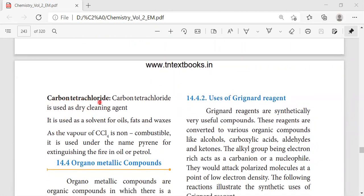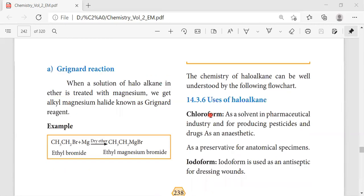Carbon tetrachloride is used as a dry cleaning agent and also as a solvent for oils, fats, and waxes. CCl4 is non-combustible. As the vapor of CCl4 is non-combustible, it doesn't catch fire in the presence of oxygen. But here, the CCl4 is non-combustible and is used under the name pyrene or fire extinguisher in oil and petrol fires. These are all the uses of haloalkanes.